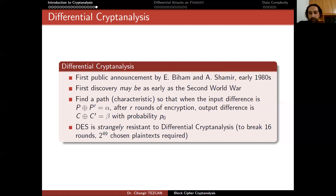DES is slightly resistant to differential cryptanalysis. To break full 16-round DES, you need around 2^49 chosen plaintexts. Since NSA knew this technique beforehand, they modified the S-boxes originally chosen by IBM, making the cipher resistant to differential cryptanalysis. This is why Biham and Shamir could only break it theoretically. If the S-boxes had been bad, it could probably have been broken with a very small amount of chosen plaintext.